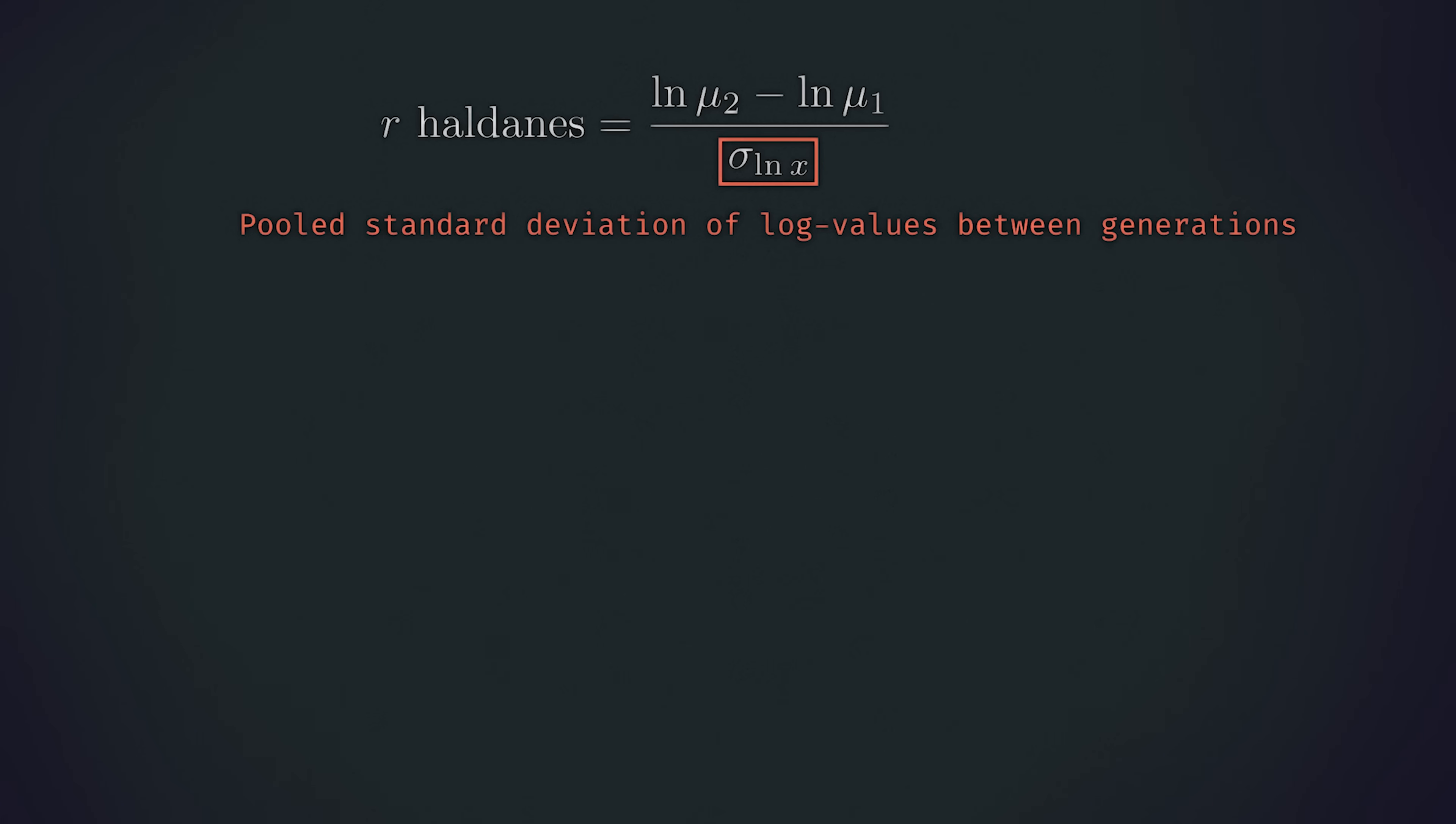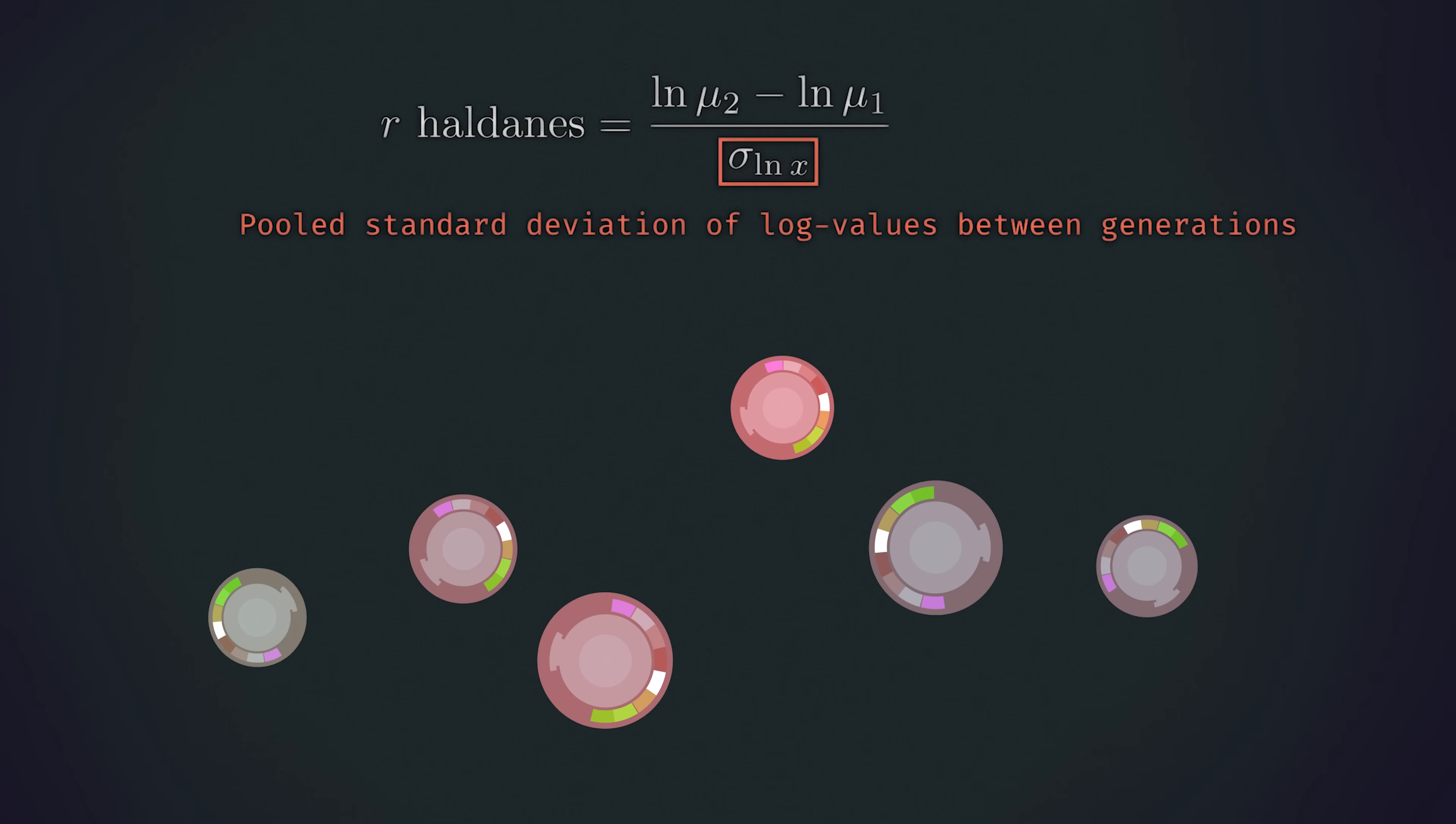The intuition behind this can be demonstrated with a couple examples. Let's construct an example population here with protozoa of different redness. Now, if the population in the second generation is large and has very small variants, this is an indication that the individuals with that trait, near the mean in the second generation, have been disproportionately successful.